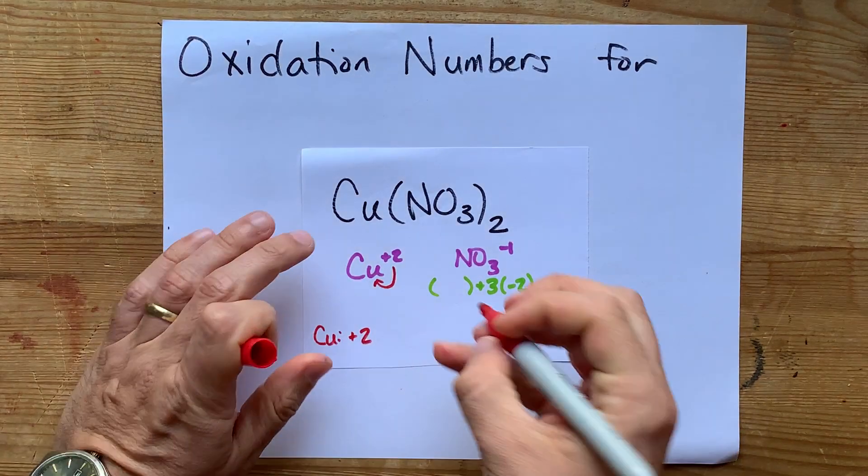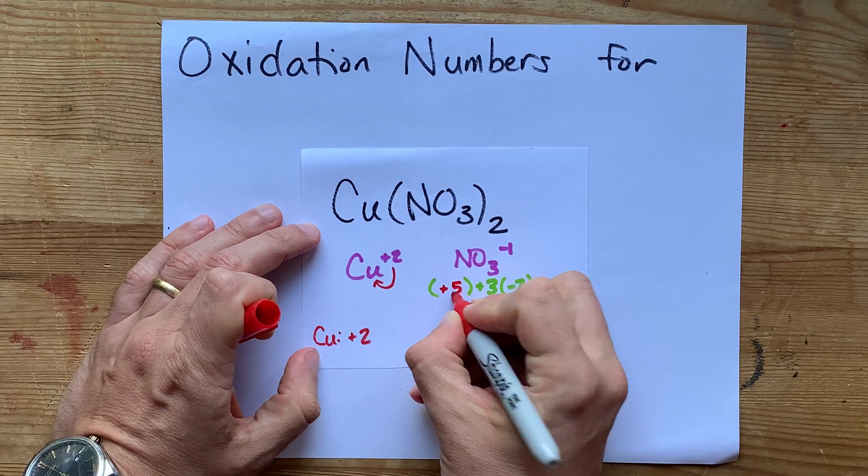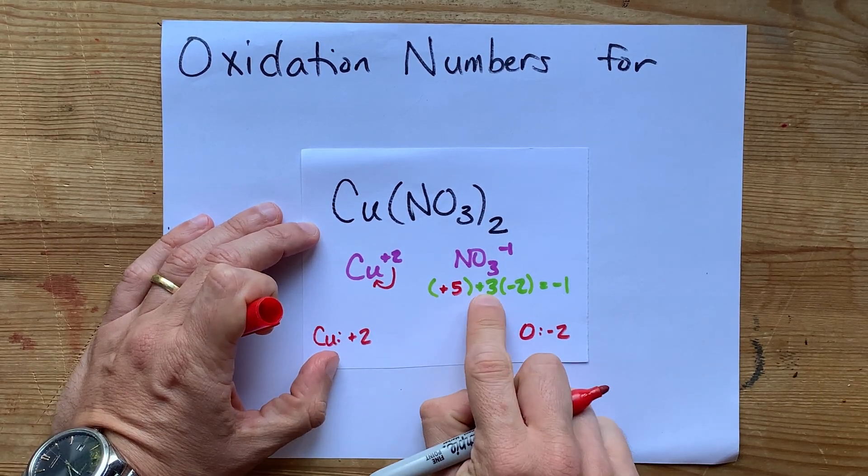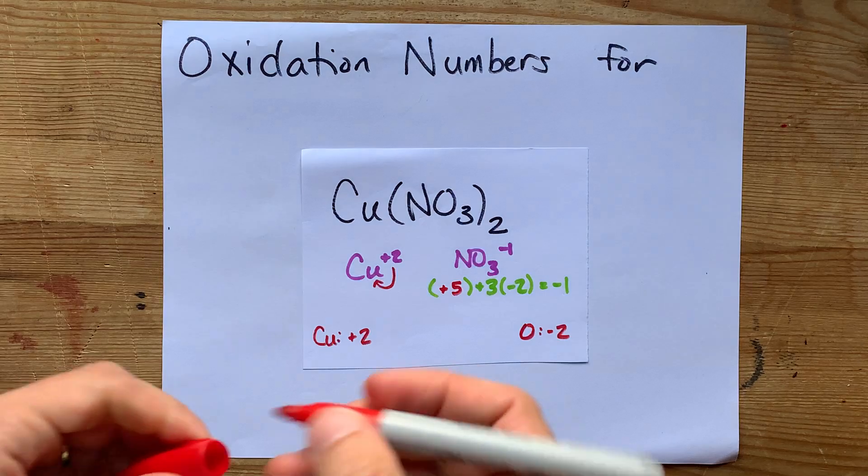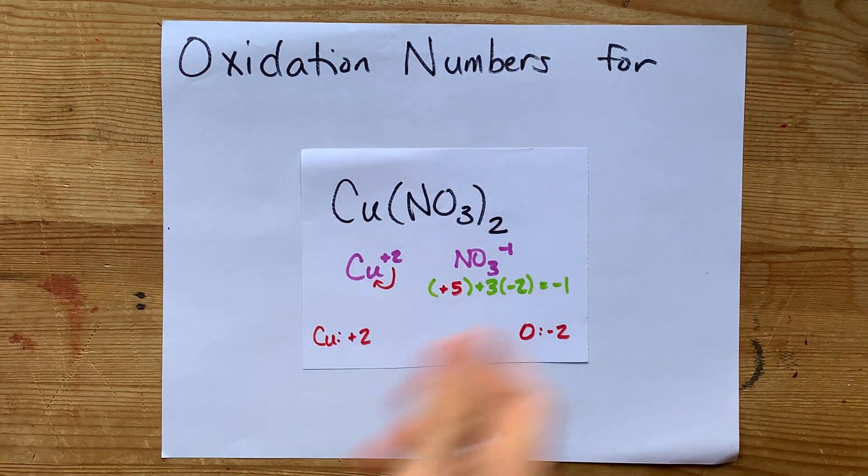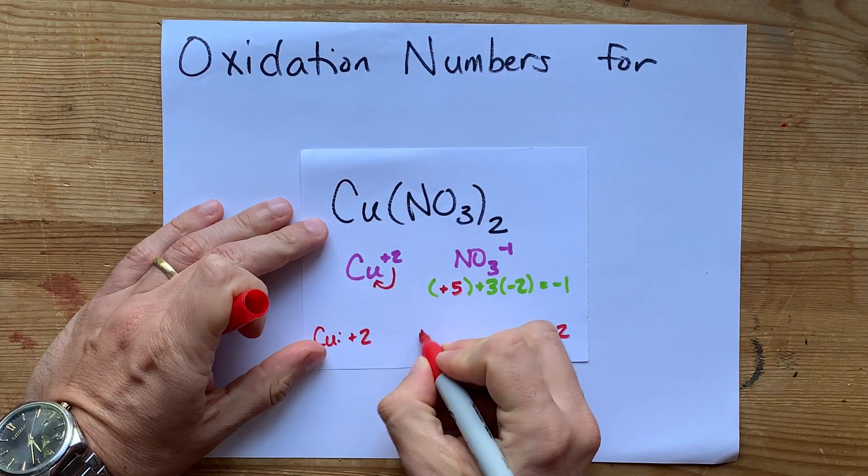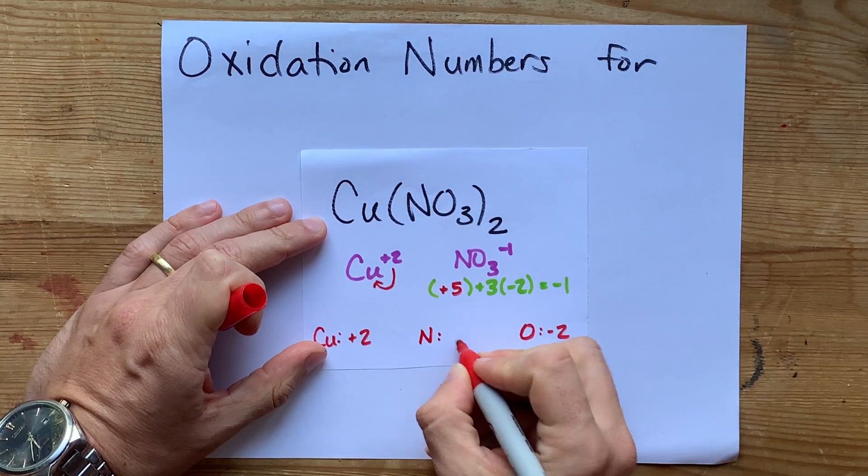And that something has to be the number plus 5, because it's 5 minus 6 that gives you an answer of negative 1. Now, you can use algebra to figure that out, but you can also just probably do it by inspection.